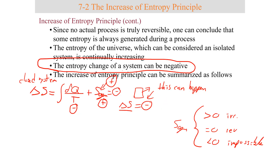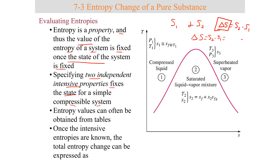For a closed system, the entropy change is attributed to the entropy transferred by mass and the entropy generated — that would all equate to the change in entropy. So if you were to go back and find the entropy at each specific state, you could find the entropy change in the system and find out what caused that change — due to entropy transfer and entropy generation.